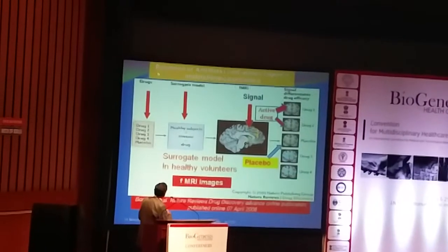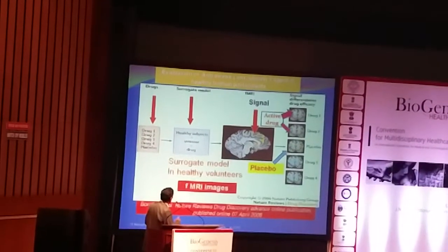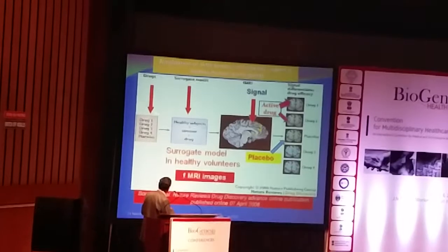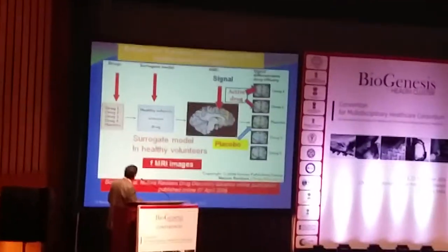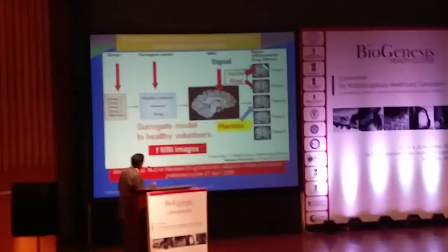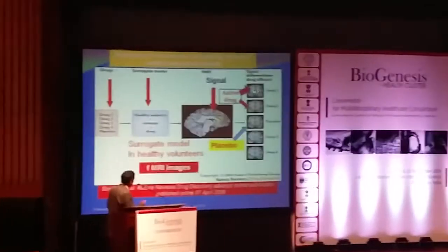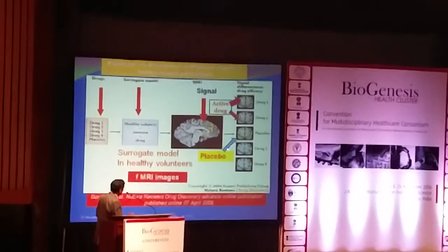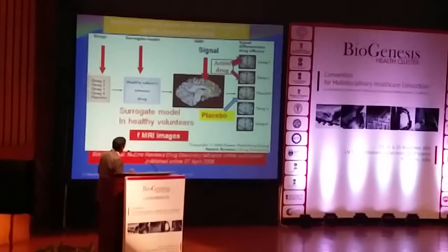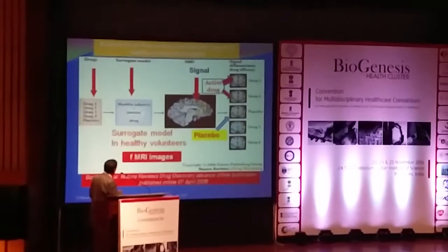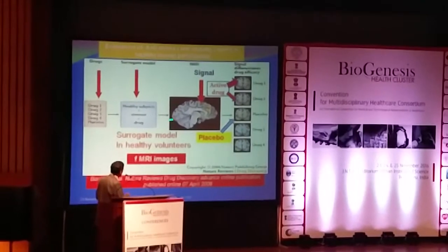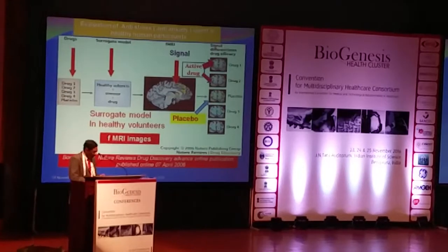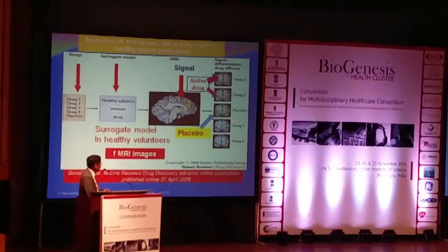Evaluation of anti-stress and anti-anxiety drugs can also be done in healthy subjects using a surrogate model. Different drugs are given and functional MRI is used to find out the changes. In the case of an active drug, you are clearly able to demonstrate the effect on the brain, whereas in the case of placebo you cannot. So in healthy subjects, by inducing some type of stress and using functional MRI, you can detect and identify your drug as an anti-stress drug.